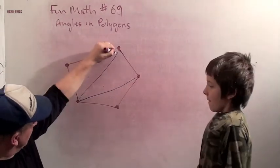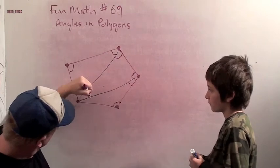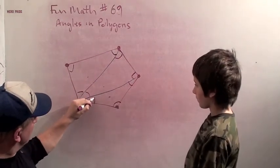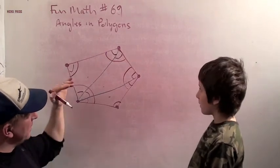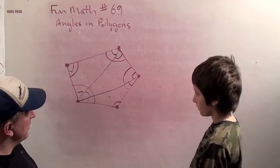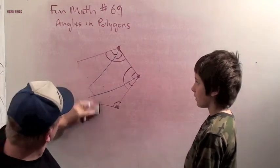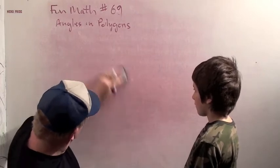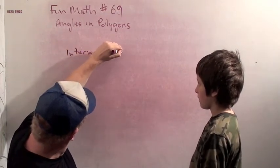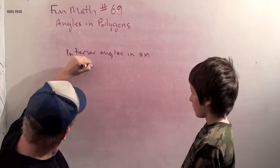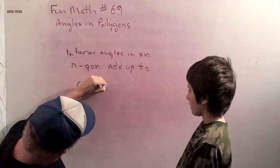So we have these angles in this triangle add up to 180, the angles in this triangle add up to 180, and the angles in this triangle add up to 180. But notice that the angles in all of these triangles combined add up to be the angles in the pentagon. So the angles in the pentagon add up to 540. We can keep extending this idea for polygons with more and more sides. And we get a formula that says the interior angles in an n-gon add up to n minus 2 times 180 degrees.